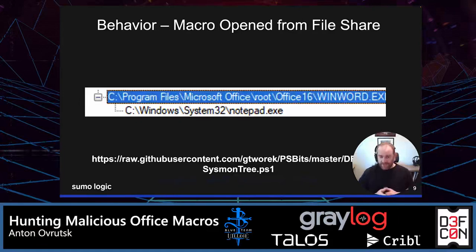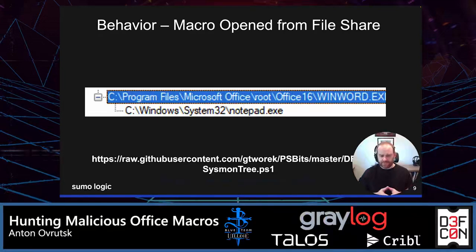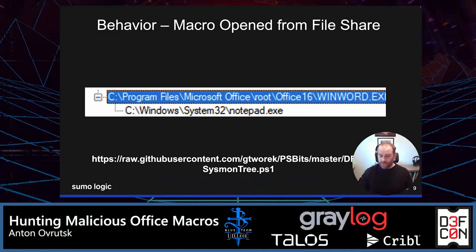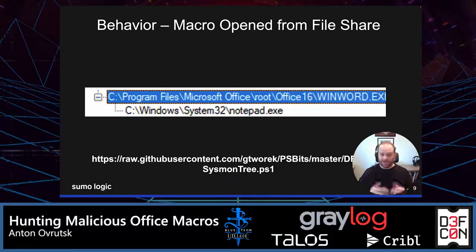For the next few slides, I'm using an amazingly useful PowerShell script written by Gregor Storik, linked directly in the slide. It presents Sysmon logs in a really nice visual. Here we see a super basic example: a macro launched from a file share where the macro opens Notepad. If you look at the full command line, it would contain the path from where this macro was opened. Just by using process creation events, we can already see things like where macros are being opened from and what processes they're spawning — two key pieces of information when making a determination as to whether a particular macro is malicious or benign.